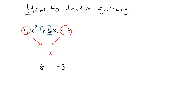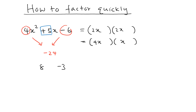When the leading coefficient is not 1, you have multiple options for the binomial factors. For example, you could have 2x and a number times 2x and a number, or 4x and a number times x and a number. The numbers written in the binomials come from the factors of the leading coefficient, which is 4. The factors of 4 are 2 times 2 or 4 times 1, giving us two options to test.